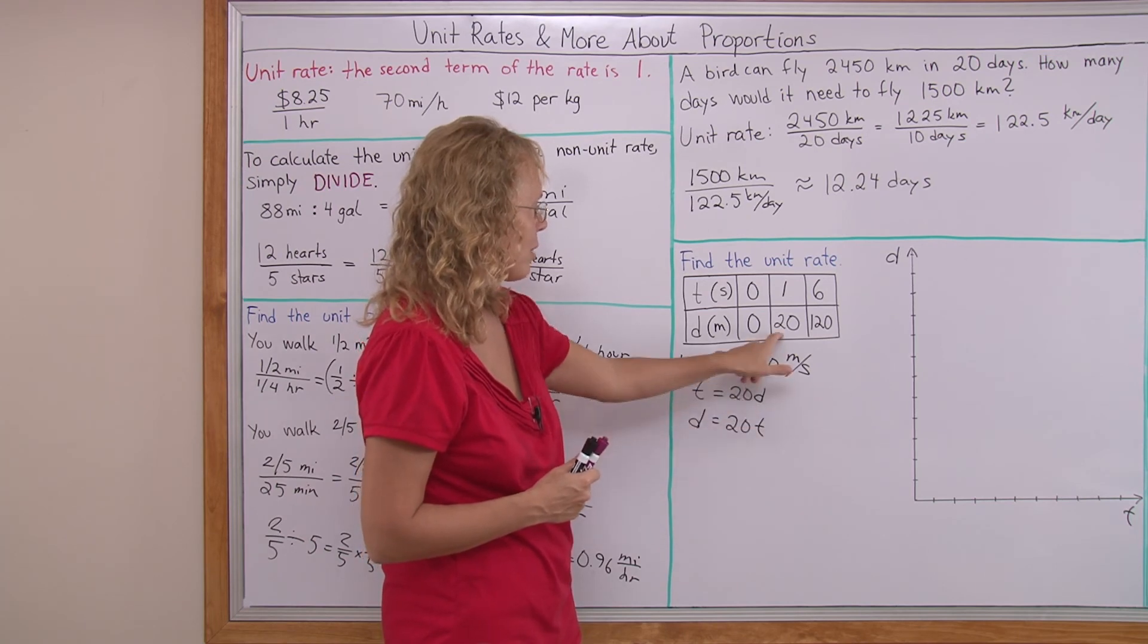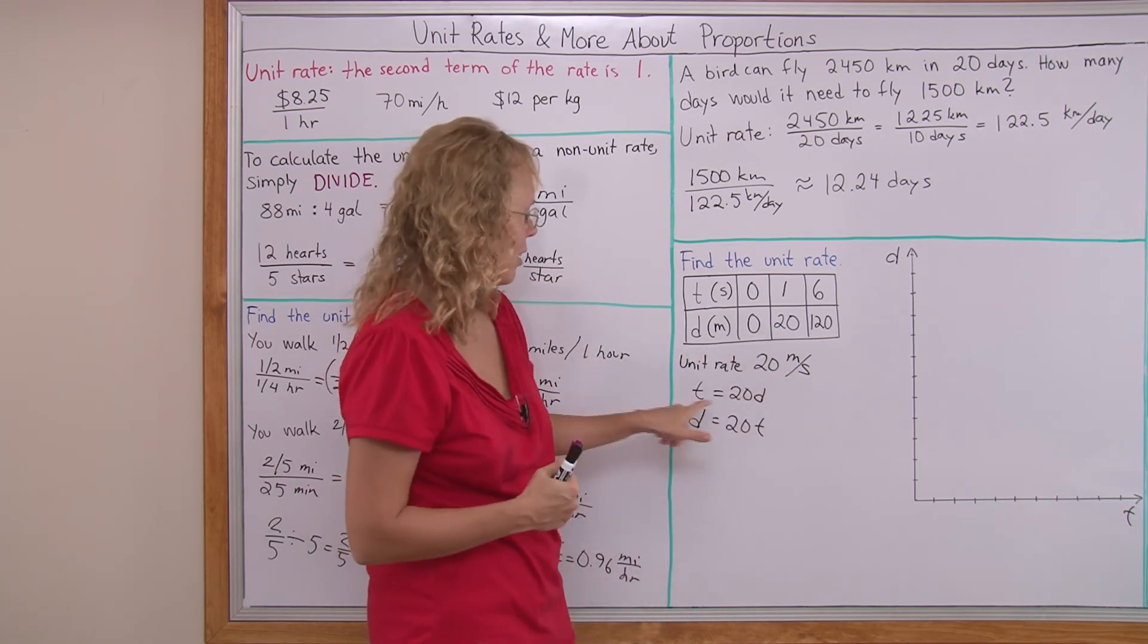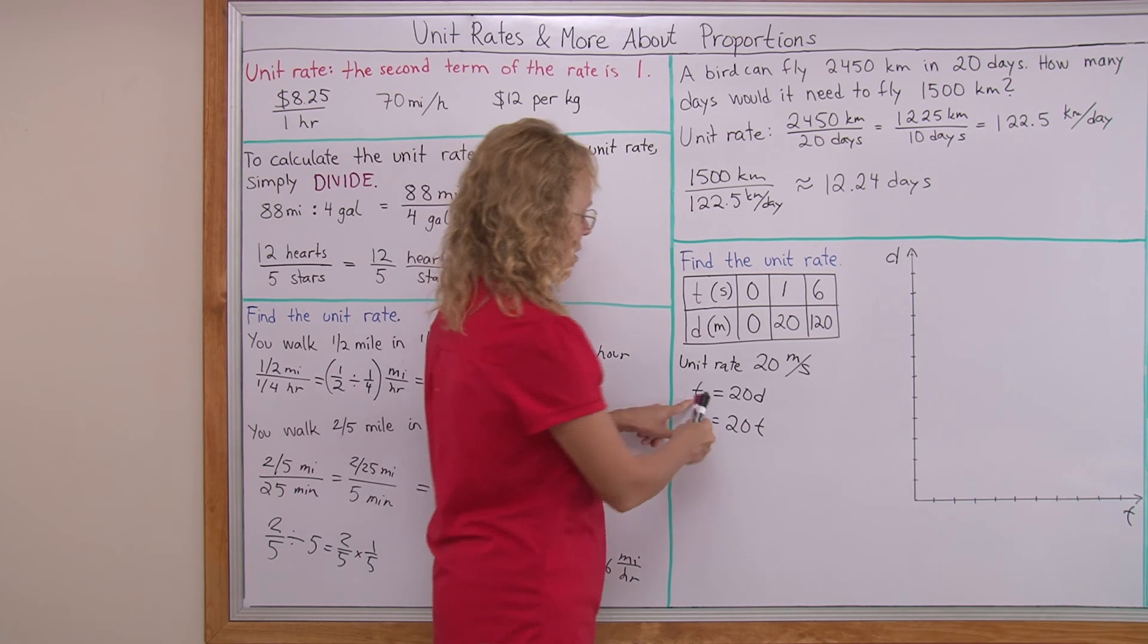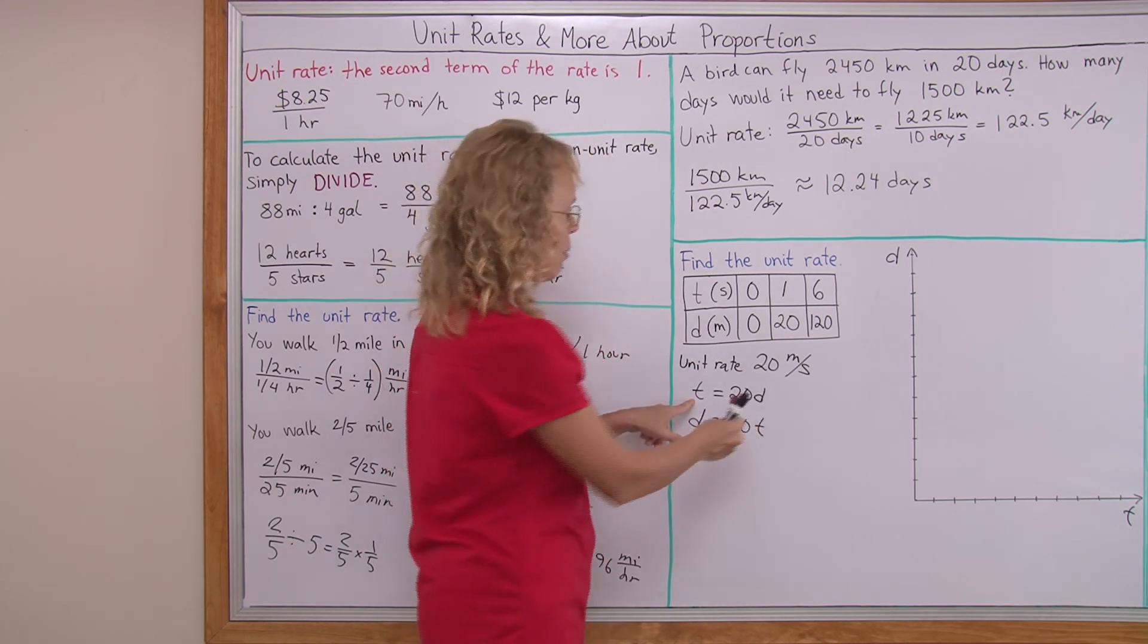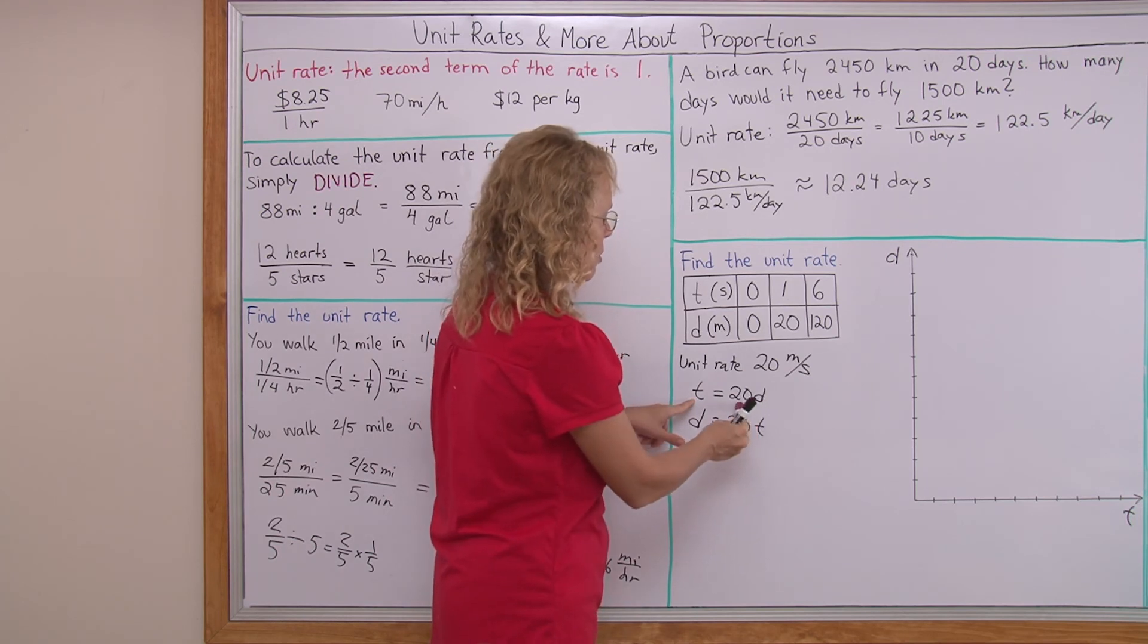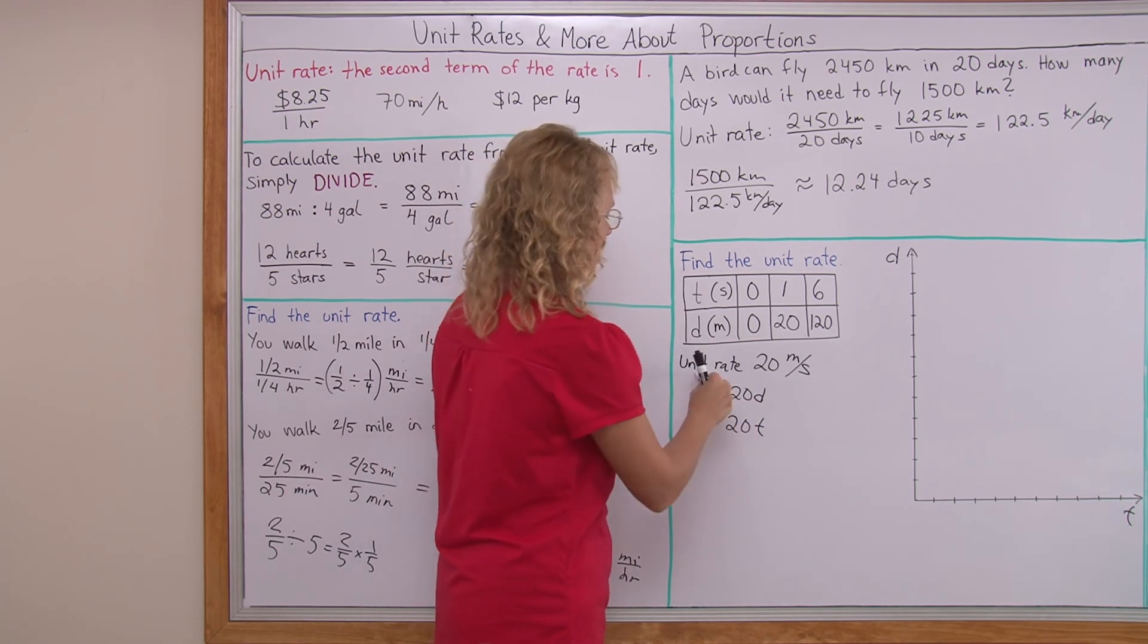If t is 1, then will you get 20 as your distance? If t is 1 here, then 1 equals 20 times some number. I will not get 20 here. 20 times 20 would be 400. So this is the one that does not work.